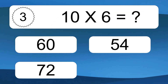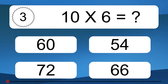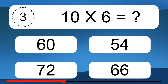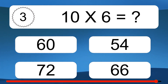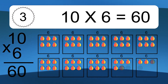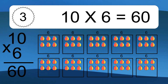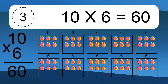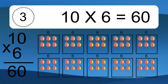Ten times six equals what? Ten times six equals 60. We have ten boxes, and each box has six colorful balls inside. If you count all the balls in all the boxes together, you will have ten times six balls. This equals 60 balls.